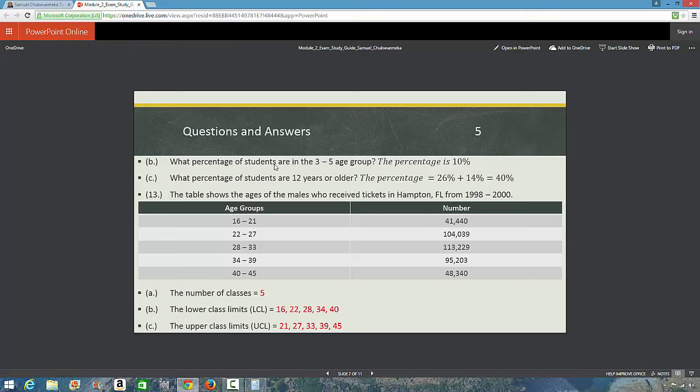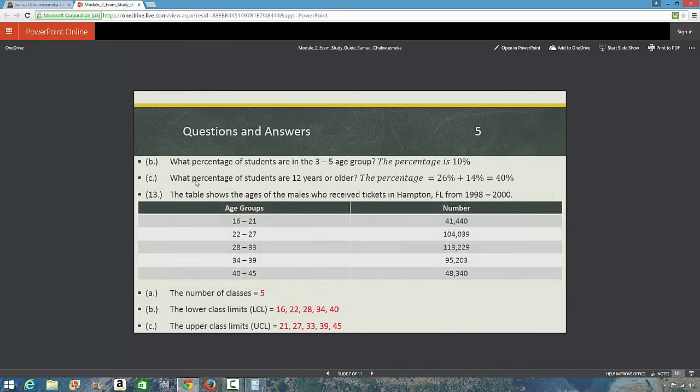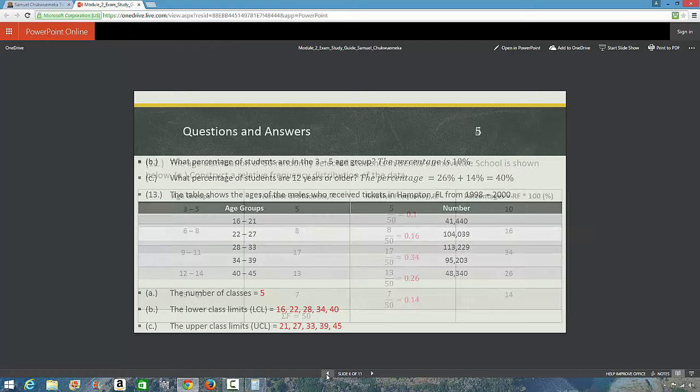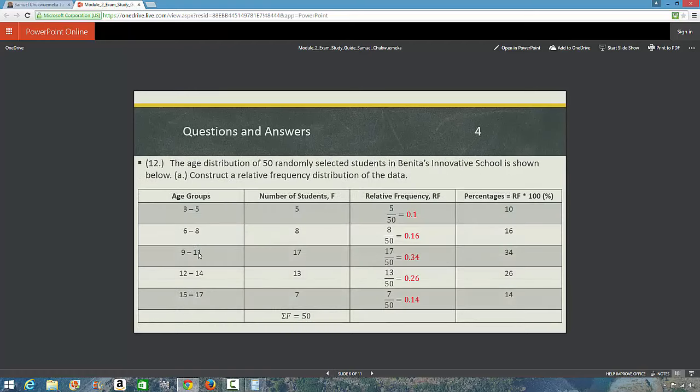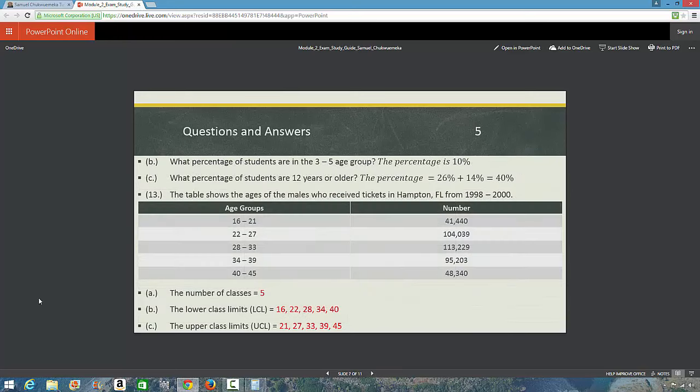What percentage of students are in the 3 to 5 age group? So, if we look at that, 3 to 5 age group is 10%. What percentage of students are 12 years or older? 12 years or older means it could be this age group and this age group. So, 26% plus 14%. That gives you 40%.